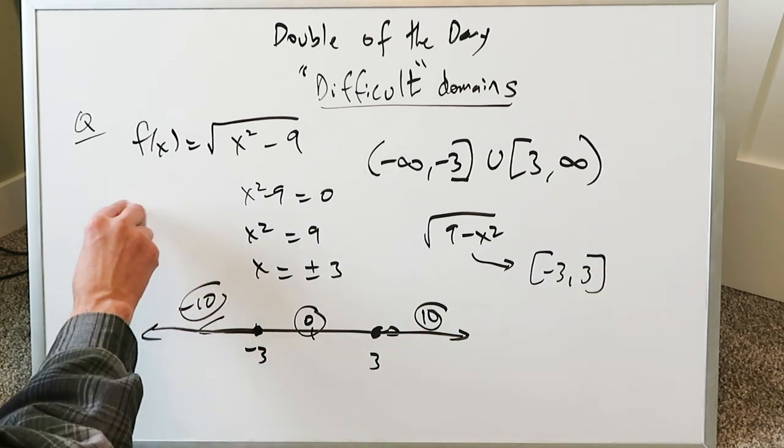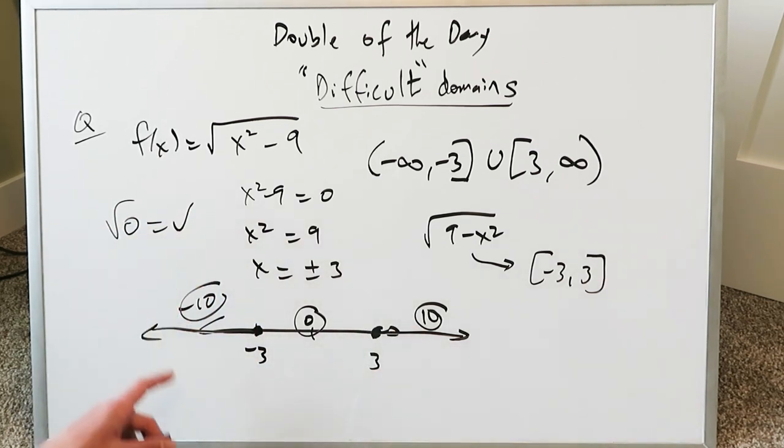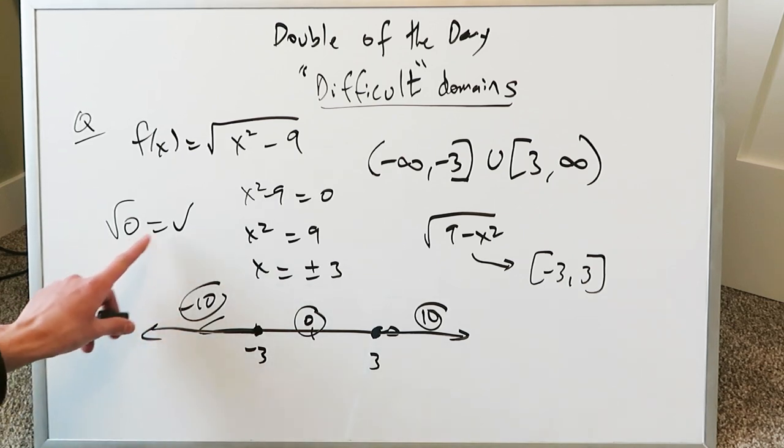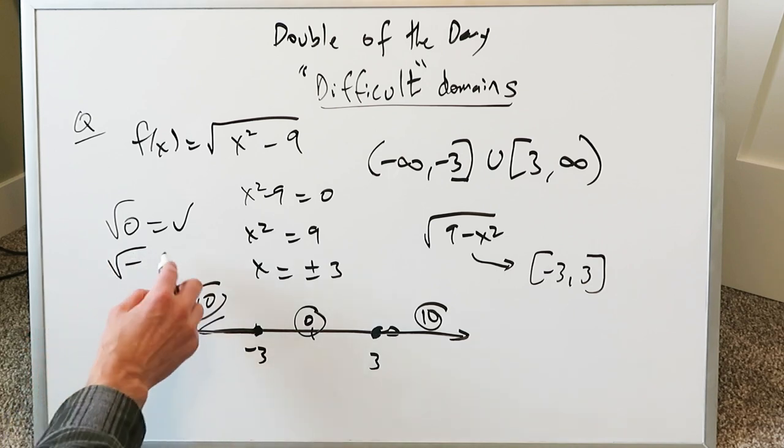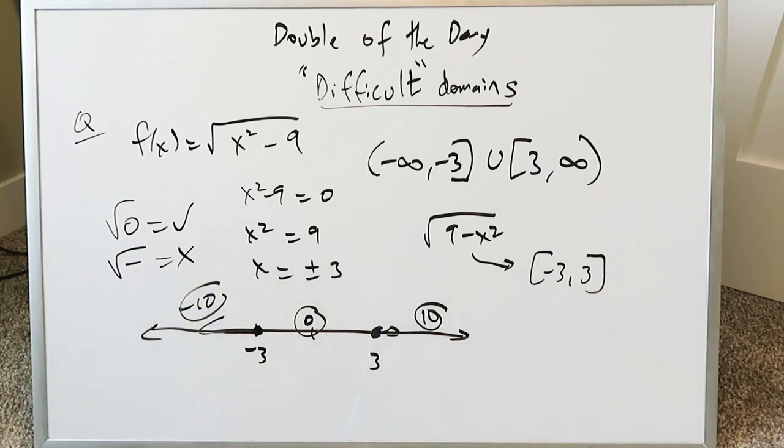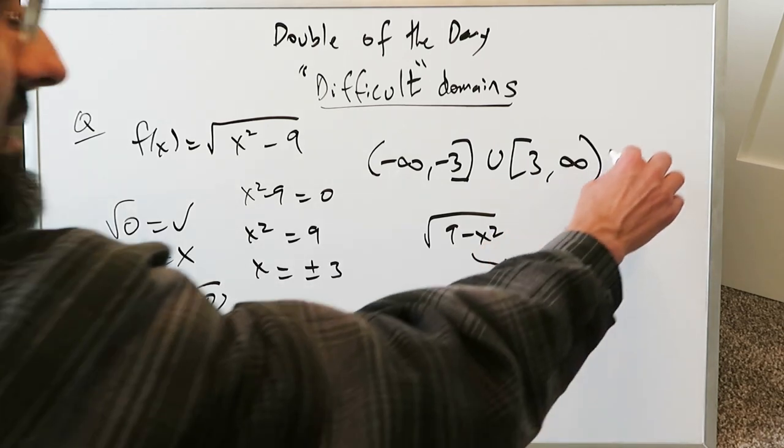And remember you can do a square root of a 0 and that's right. There's nothing wrong with doing a square root of a 0, it's equal to 0. Your problem is you don't want to be doing a square root, an even root of a negative number because that's undefined for the purposes of domain. So this question is done. This right here is your answer.